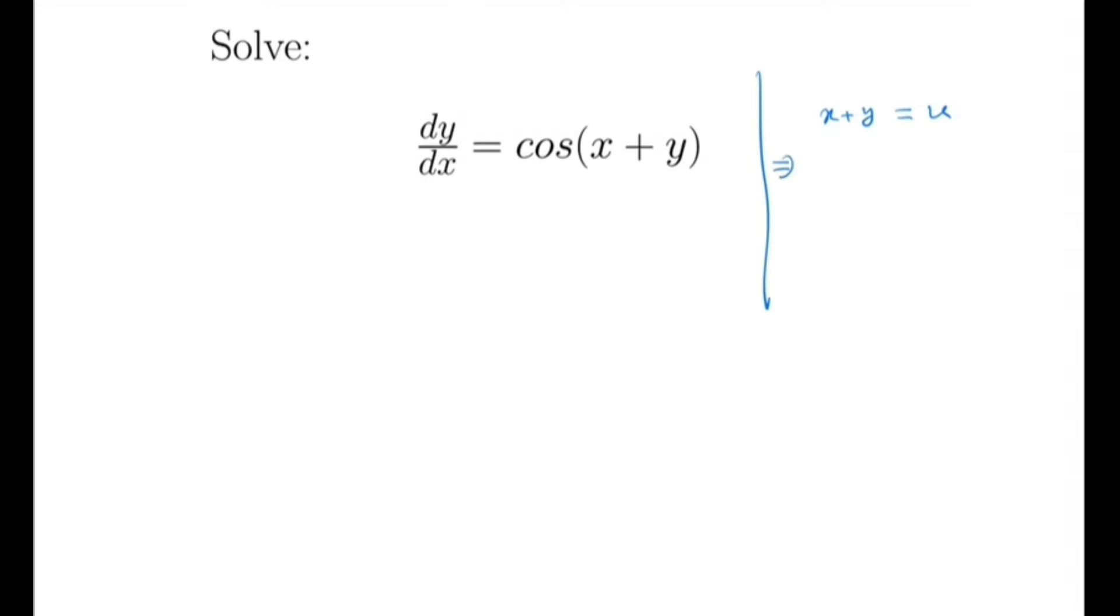By taking the derivative of both sides we get 1 plus dy/dx equals du/dx. So we have dy/dx equals du/dx minus 1.